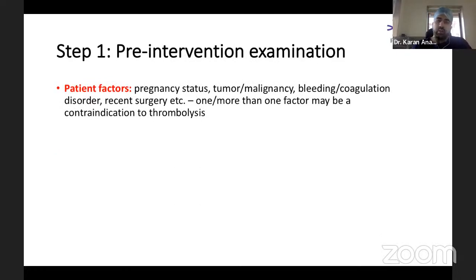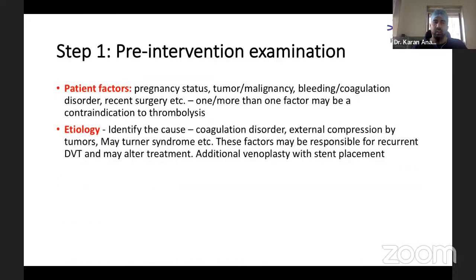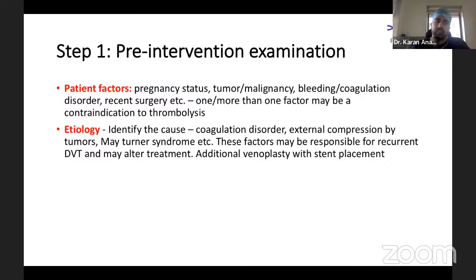In the pre-intervention examination, we assess patient factors including pregnancy, underlying tumor or malignancy, bleeding or coagulation disorders, and recent surgery — all contraindications to lysis due to high bleeding risk. Etiology of the thrombus is important: ruling out past recurrent thrombosis suggesting a genetic coagulation disorder, ruling out extrinsic compression by tumor, or May-Thurner syndrome, which can be responsible for recurrent DVT. Patients with suspected recurrent DVT may require long-term anticoagulation and hematological workup for genetic causes.